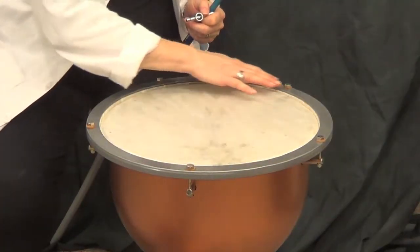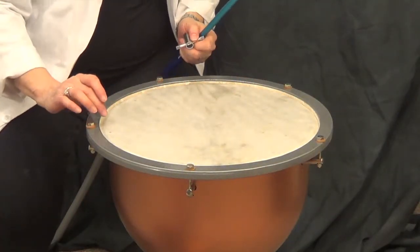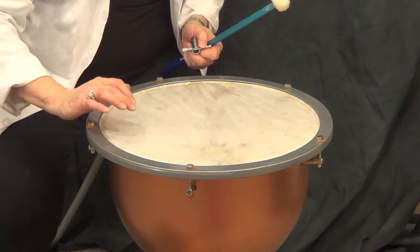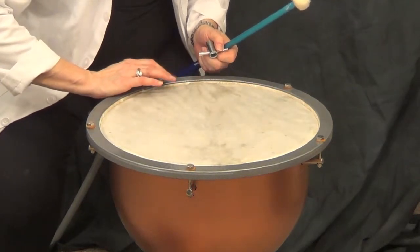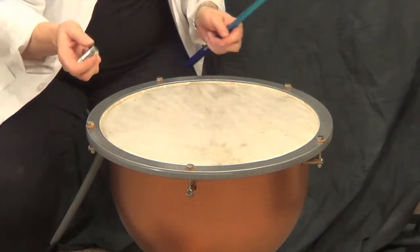So to make sure that the tension is distributed evenly, you need to check each spot on the drum and make adjustments with the tuning key.